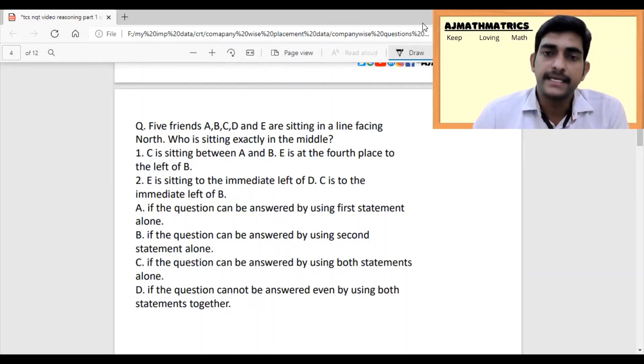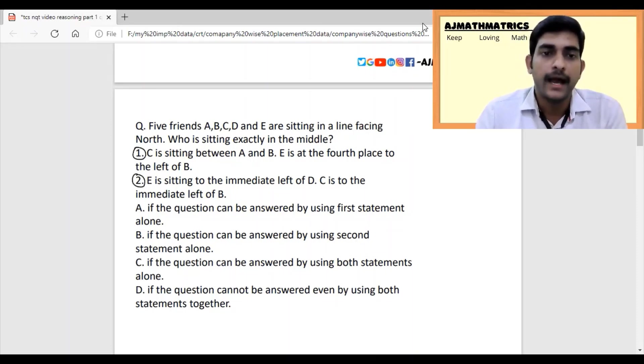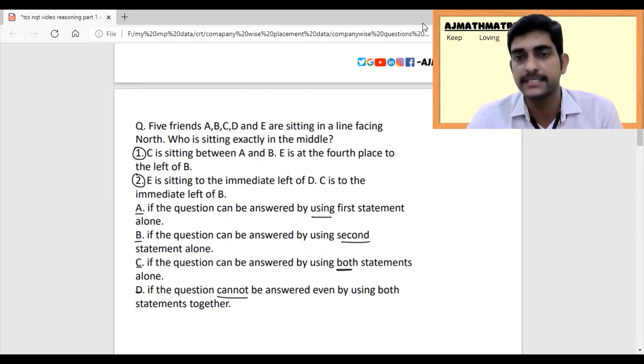Five friends A, B, C, D, E are sitting in a line facing north. Who is sitting exactly in the middle? Two statements are given with four options. Option A says the question can be solved using the first statement. B says using the second statement. C says with both statements together, and D says cannot be answered. This is a seating arrangement question but it's a data sufficiency question. We're not finding the answer, just checking if the data is sufficient.